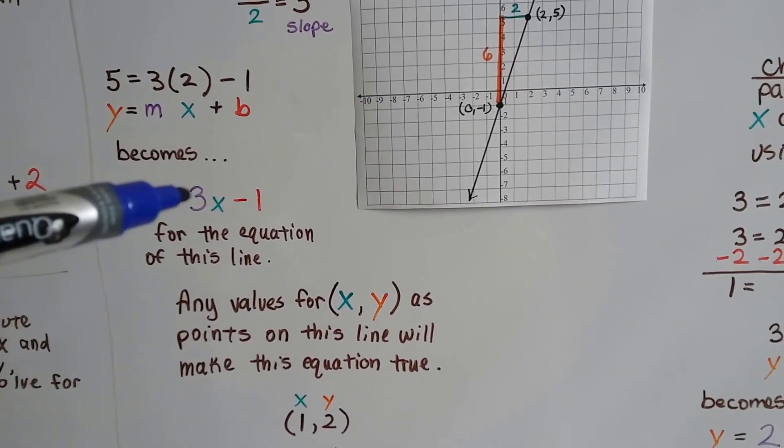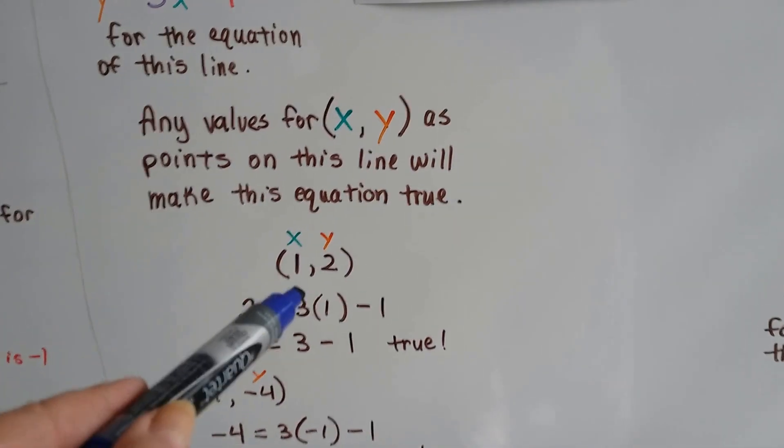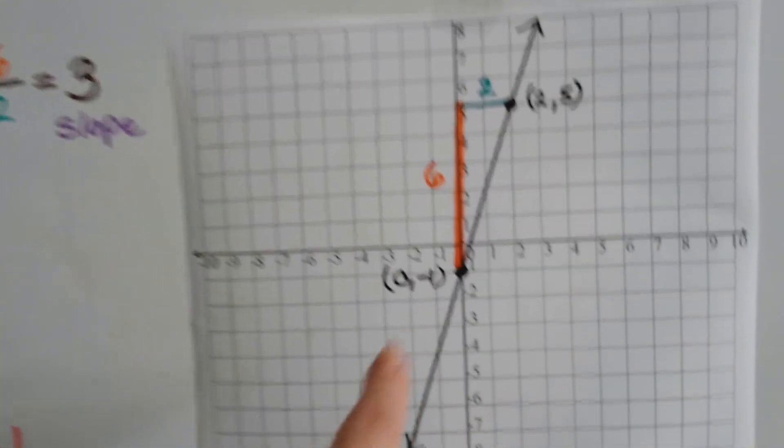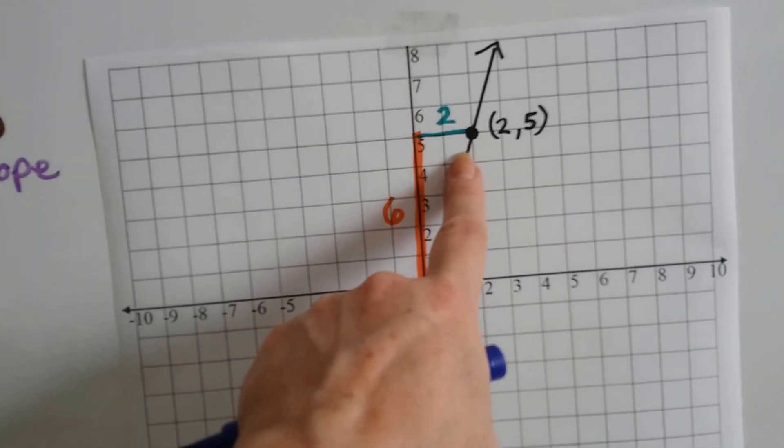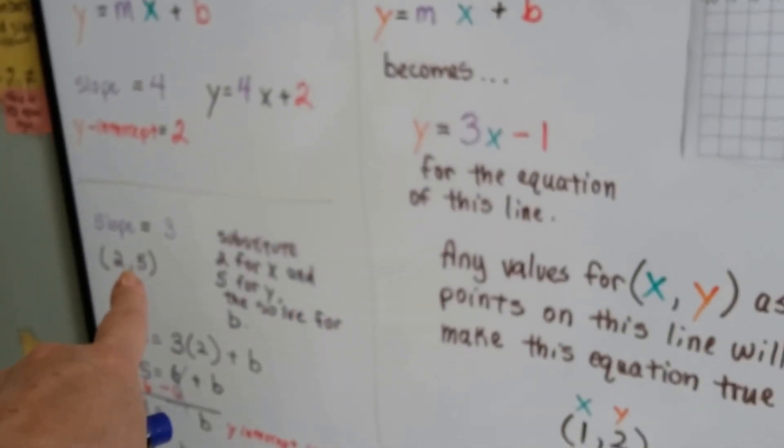So let's take a look at 1 comma 2. So we used this point, the y-intercept, and we used 2, 5 as our points that were given us.